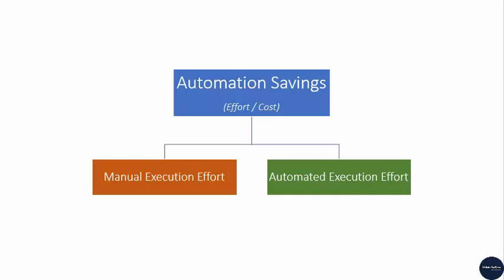Before we jump into the savings part, we need to see how the effort can be calculated. First, we will find out manual execution effort, which should be straightforward. Then we'll find out how the effort for automated execution can be calculated. It seems easy to find out the effort involved in automated execution, but it is not. There are many factors where human intervention is required when running test automation, which are sometimes ignored by the automation tester. In this tutorial, we are going to concentrate on those factors.